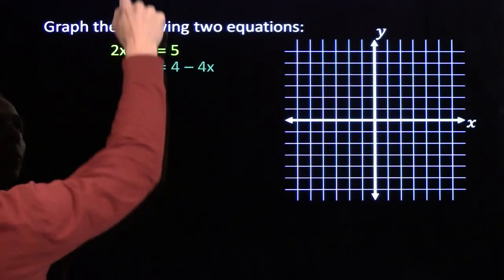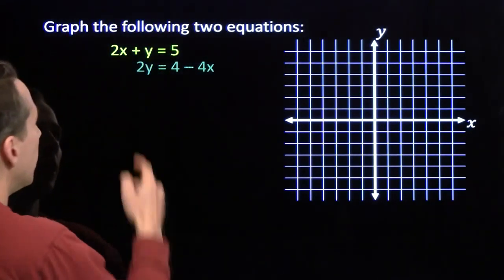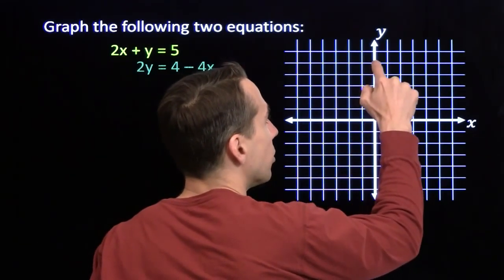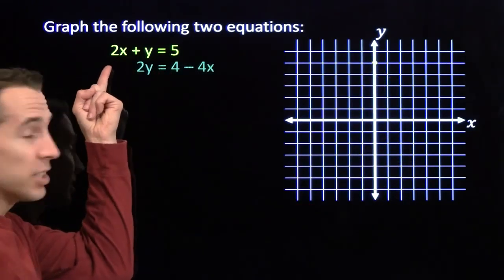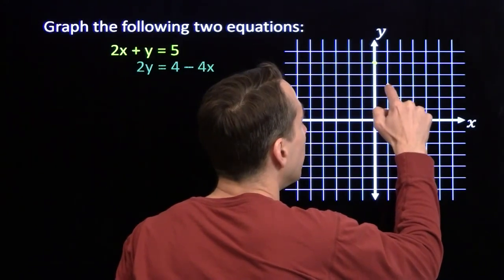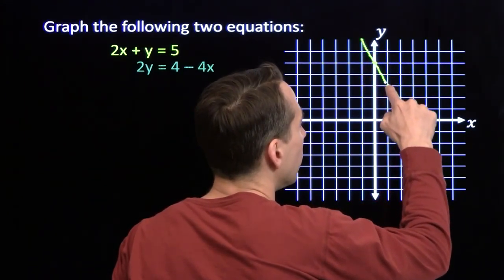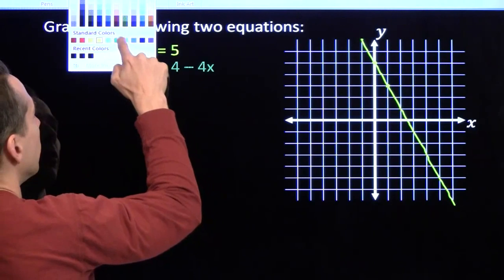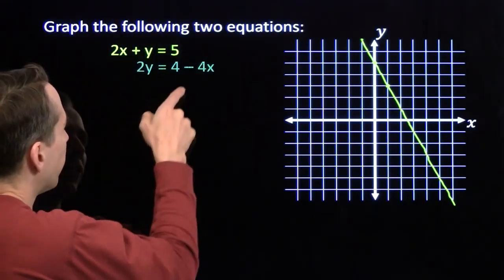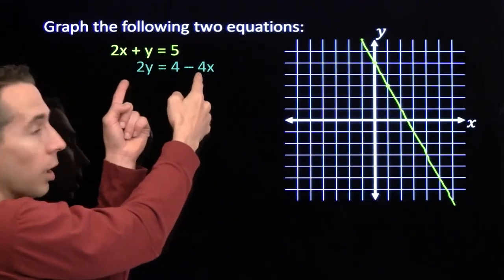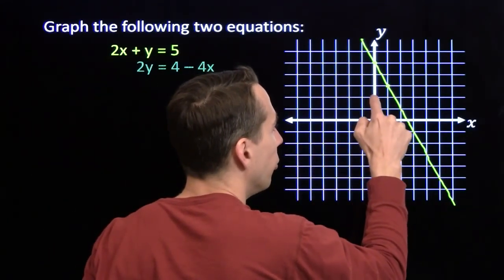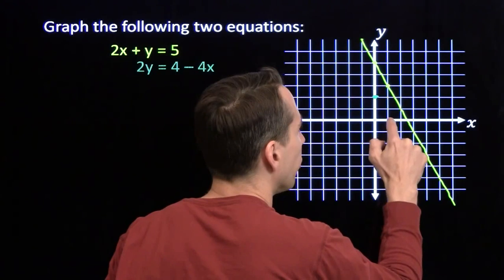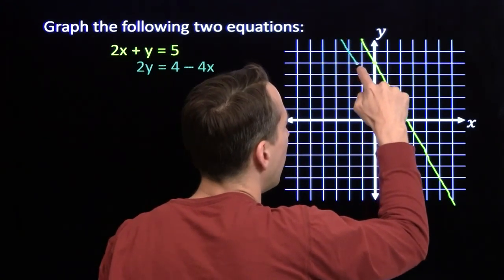Let's check it out. Once again we'll grab the yellow pen and graph the yellow equation. If I put in x equals 0, I get y equals 5. If I put in x equals 1, I'll get y equals 3 — so the points (0, 5) and (1, 3) are on the graph. Then we grab the green pen for the green equation. If I put in x equals 0, I'll get y equals 2. And if I make y equals 0, then x has to be 1 — so point (1, 0) is on the graph. And now I have the green line.